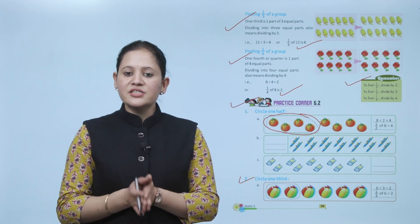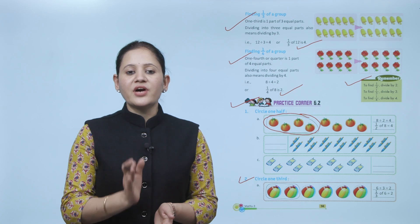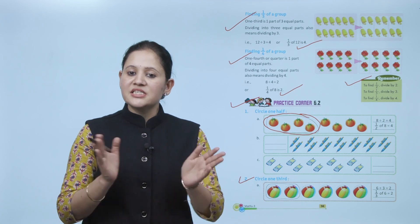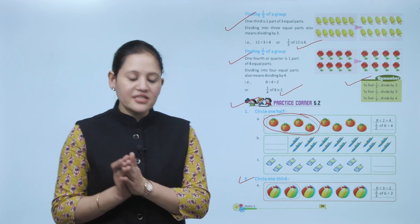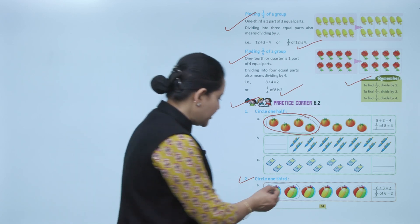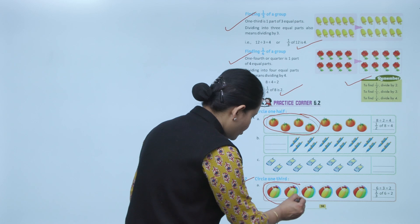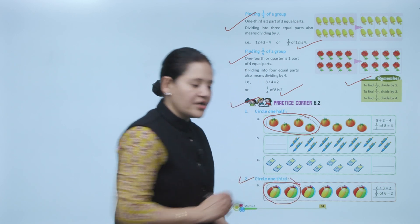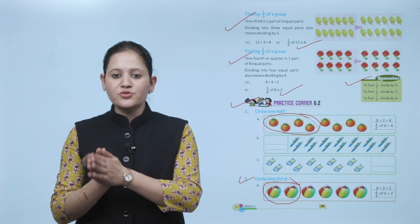Circle the third: total number of balls is 6. We have to find one third, which means divide by 3. 6 divided by 3 equals 2. So it will represent 1 by 3 part.